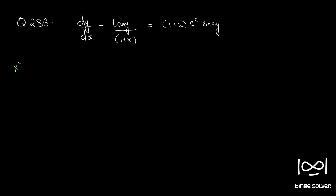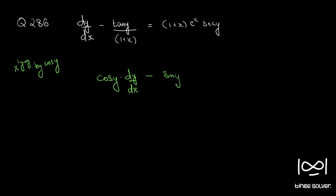Multiplying by cos(y), we get cos(y) into dy/dx minus tan(y), where tan(y) is sin(y) by cos(y). So we have sin(y) by (1 + x) is equal to (1 + x) into e^x.